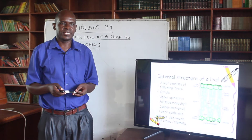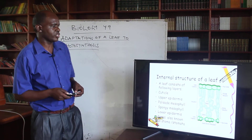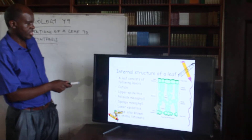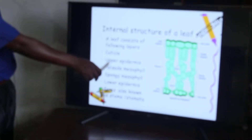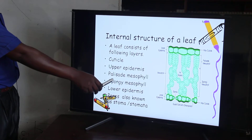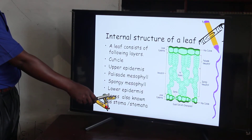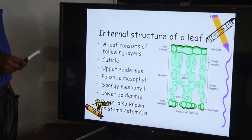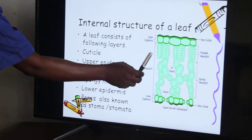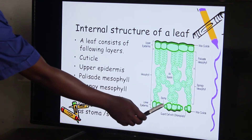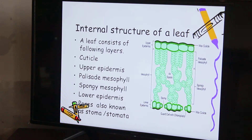Now, to start with, it is important to look at the key sections when it comes to the internal structure of a leaf which are directly involved in photosynthesis. We have the upper epidermis, we have the palisade mesophyll, we have the spongy mesophyll, we have the lower epidermis, then we have the stomata, or what you call the stoma. Those are the key parts that we shall be discussing, amongst others, that are directly involved in the process of photosynthesis.